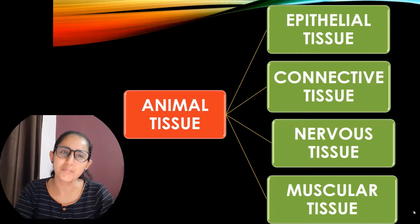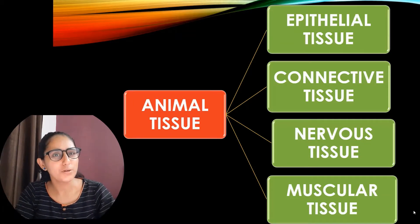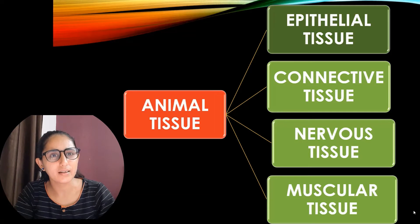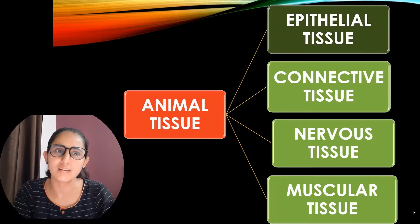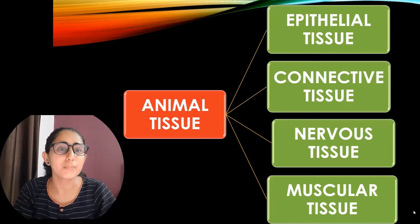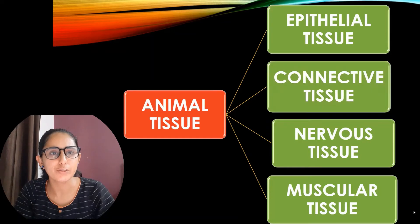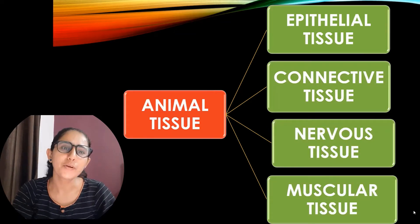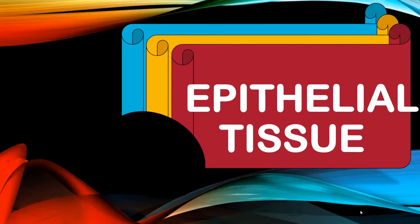Hello everyone. In the previous video we talked about plant tissues. In this video we'll be discussing animal tissues, and specifically about epithelial tissues. On the basis of functions they perform, animal tissues can be classified into different types such as epithelial tissue, connective tissue, nervous tissue, and muscular tissue. This video will be about epithelial tissue.